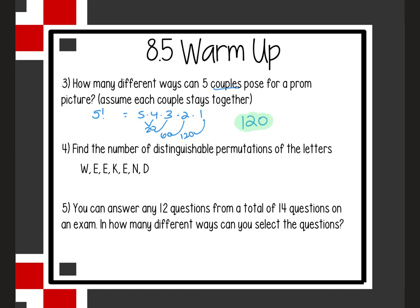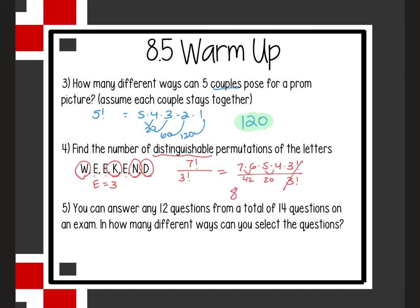Number 4 says: find the number of distinguishable permutations of the letters in the word WEEKEND. Distinguishable permutations apply when objects repeat. The numerator is all letters total — 1, 2, 3, 4, 5, 6, 7 — so 7 factorial. There's only 1 W, 1 K, 1 N, and 1 D, so we don't need factorials for those. But there are 3 E's, so we divide by 3 factorial. That gives us 7 × 6 × 5 × 4 × 3! over 3! = 7 × 6 × 5 × 4 = 840.